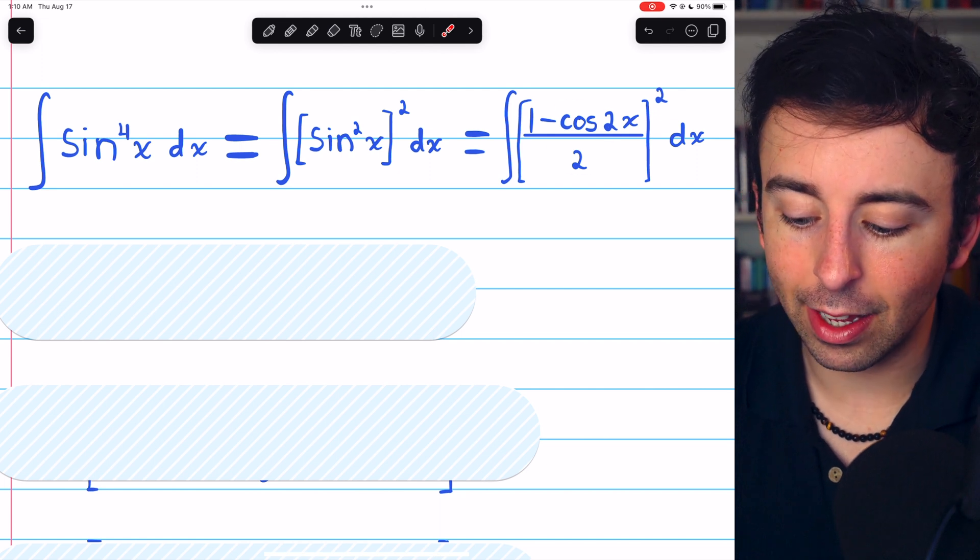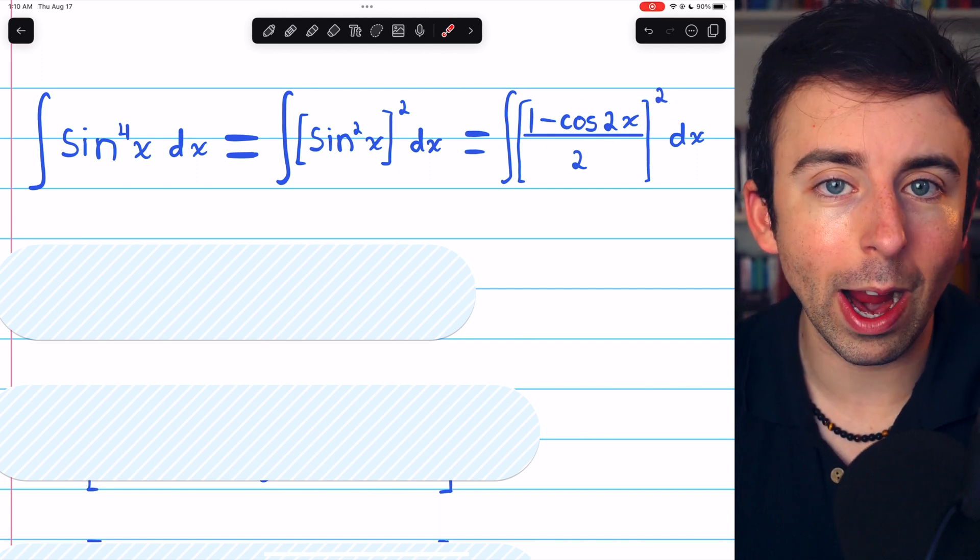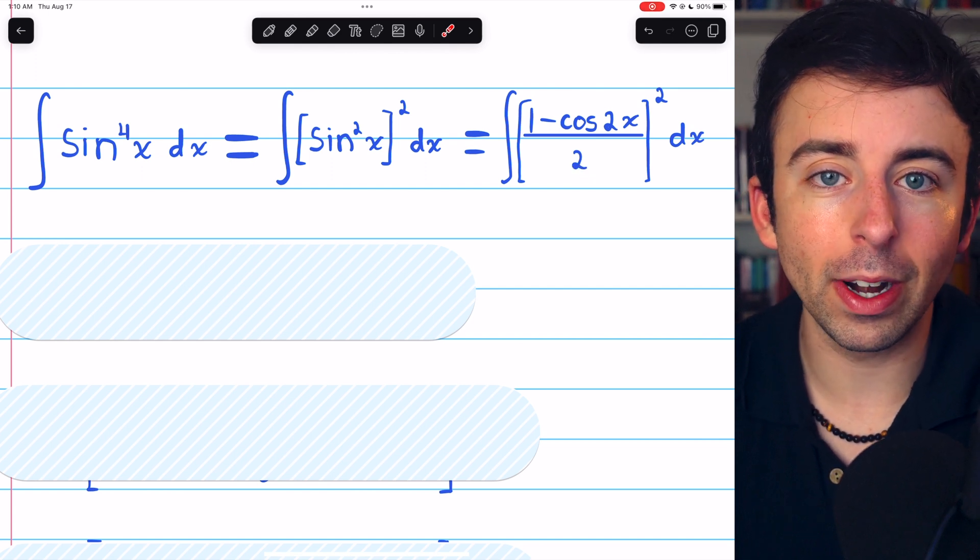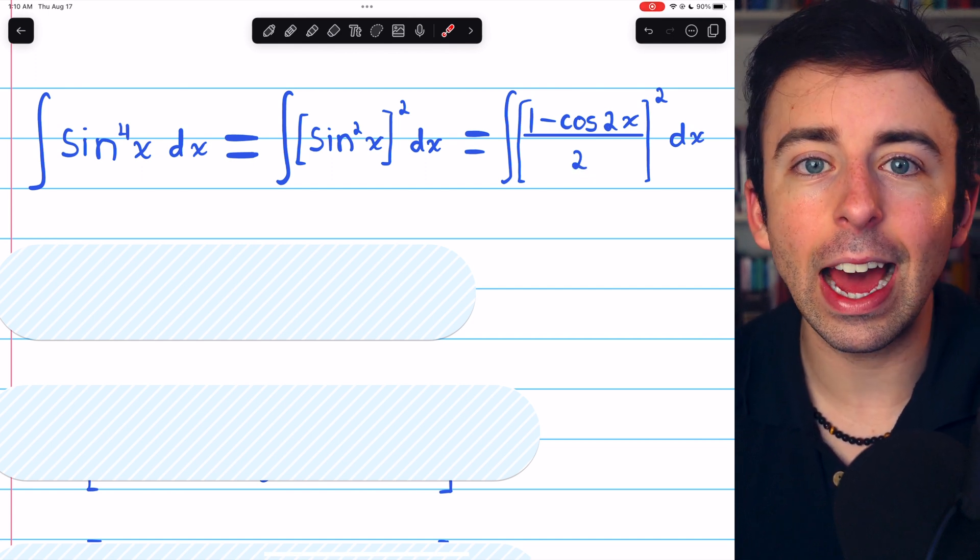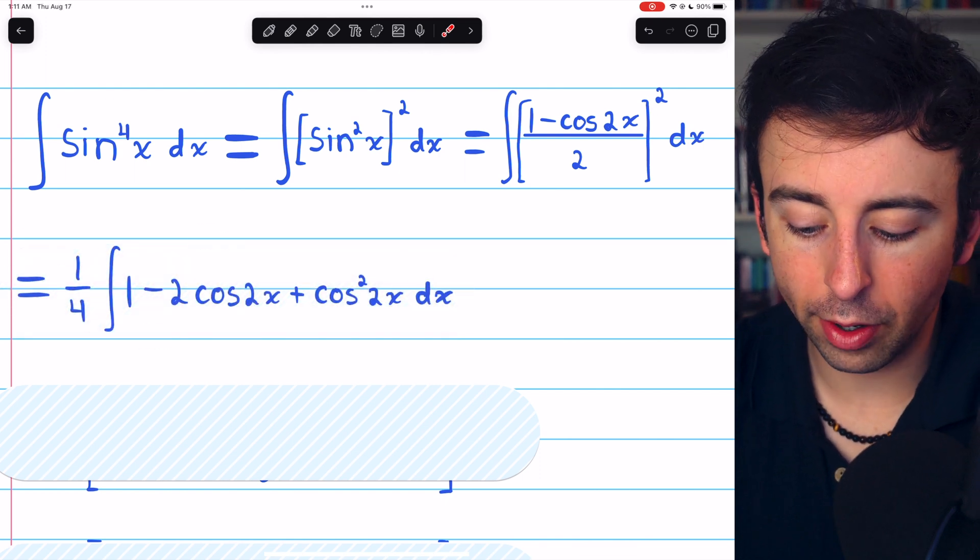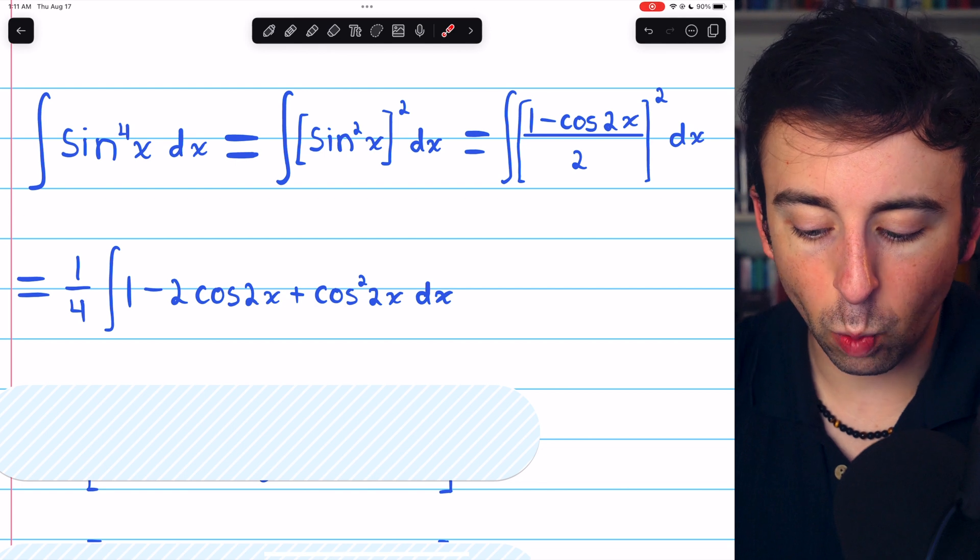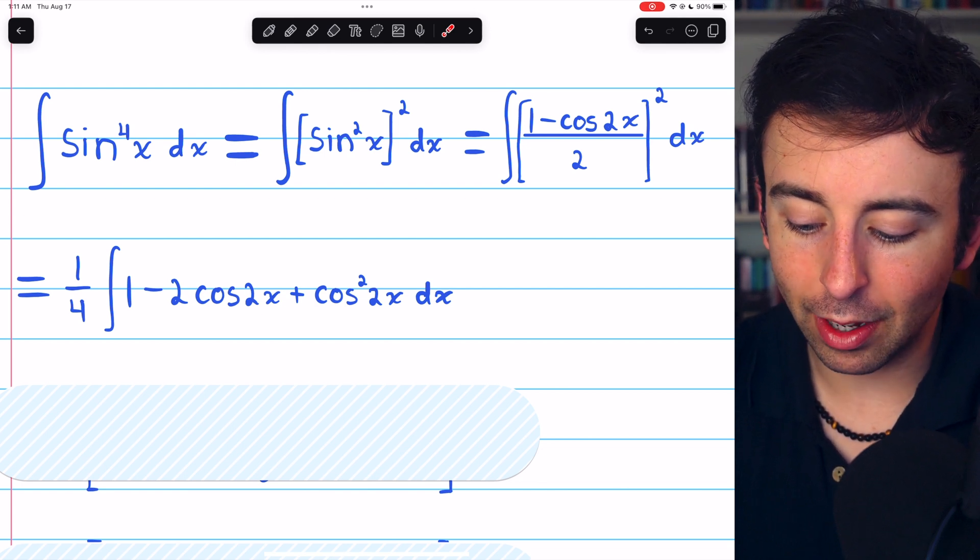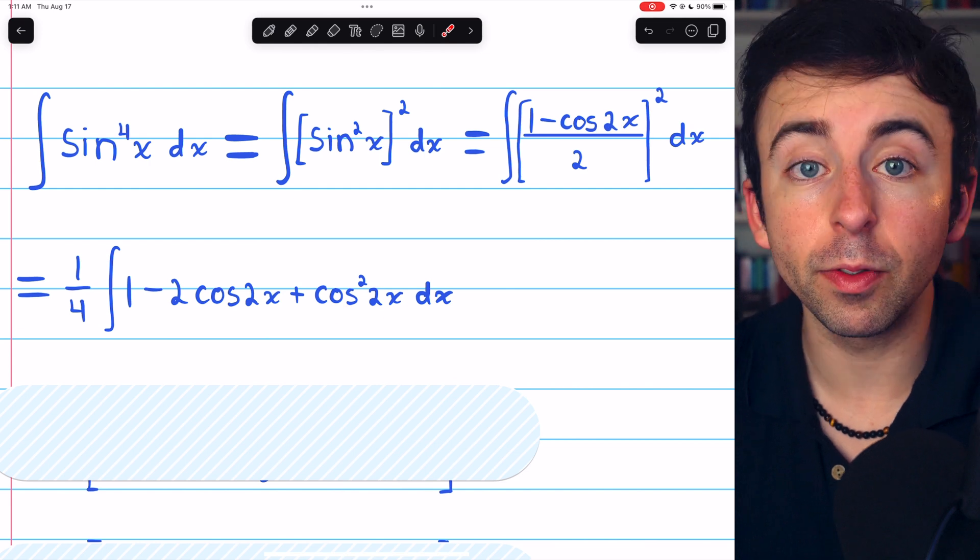Then, we can expand this, so we'll actually do the squaring. When we square the denominator, we'll get a factor of 4 down there. Let's just slide that out of the integral. That gets us here. We slid out the 1 fourth, and then squaring the numerator gives us 1 minus 2 cosine of 2x plus cosine squared of 2x.